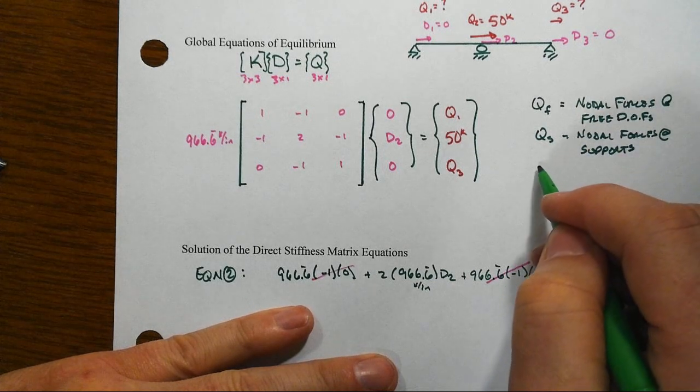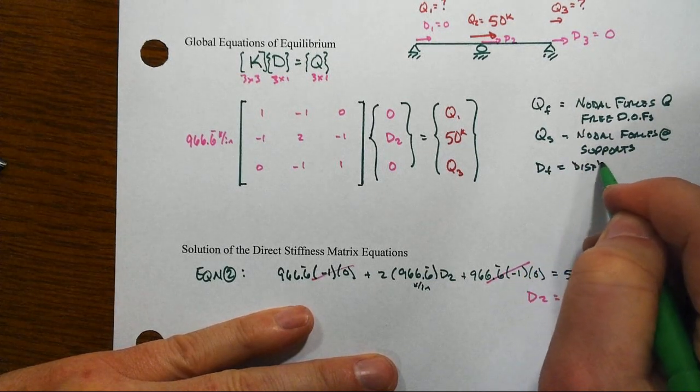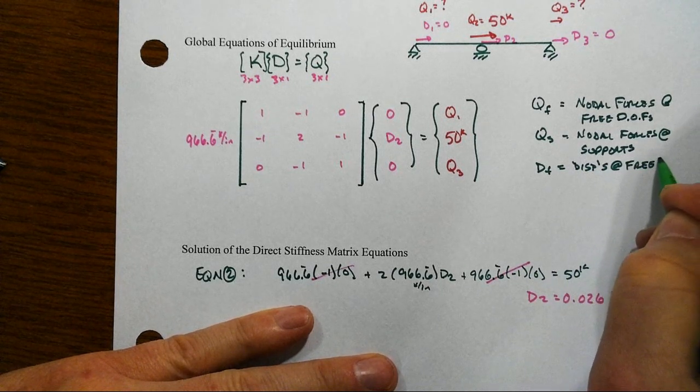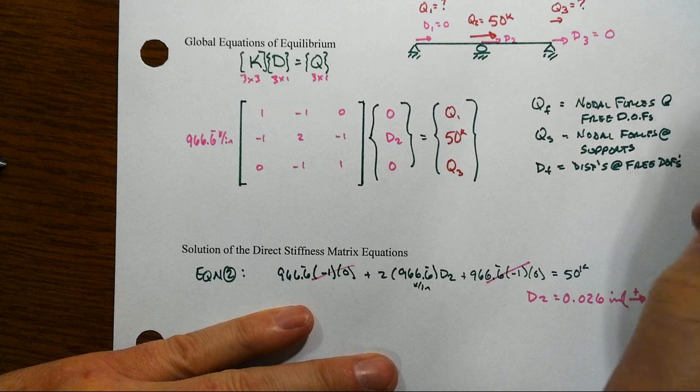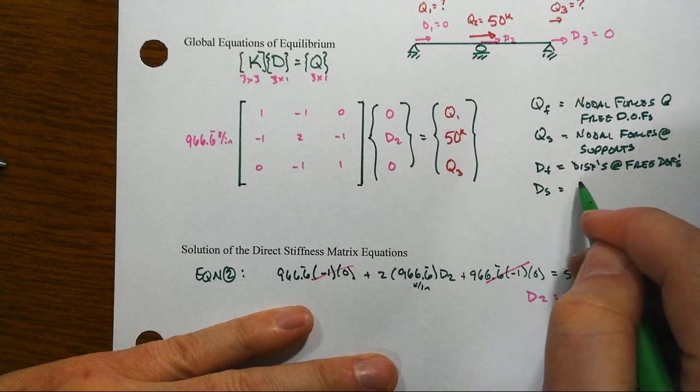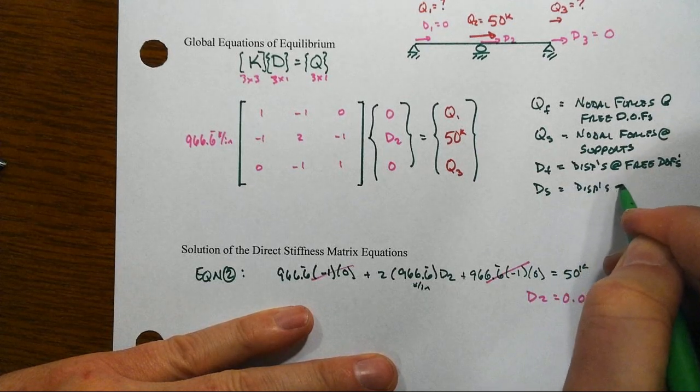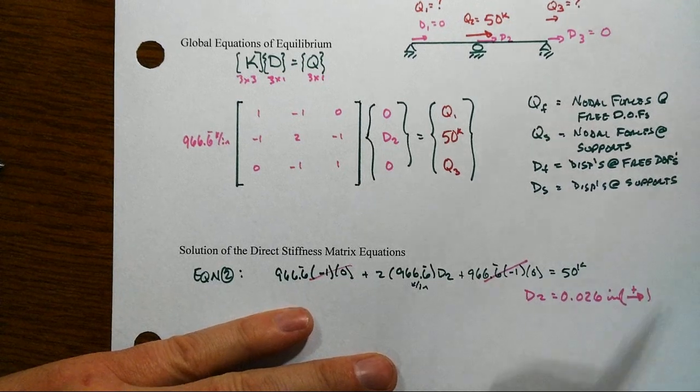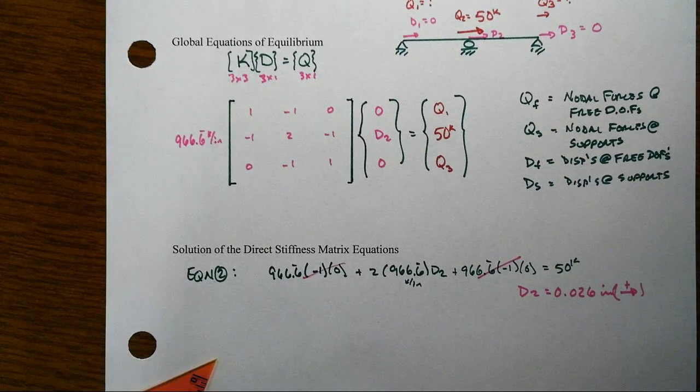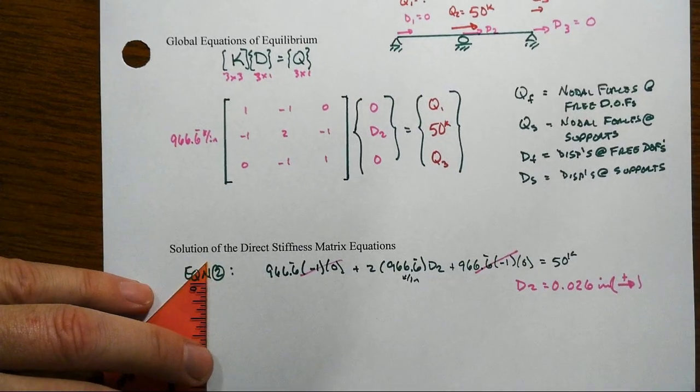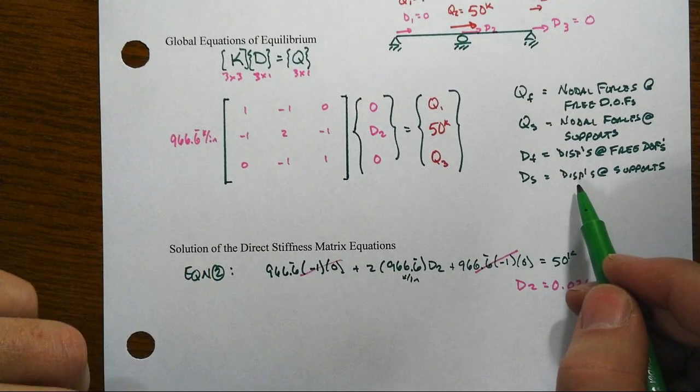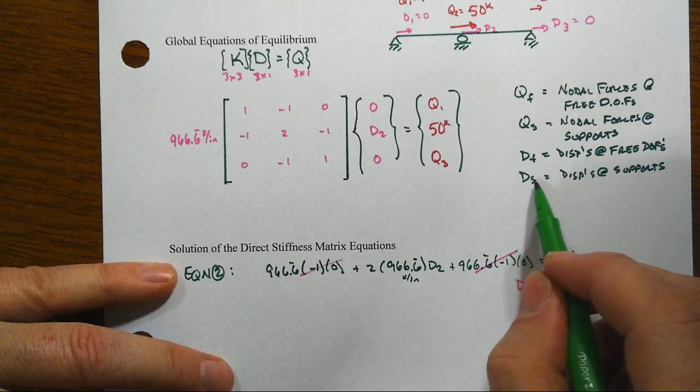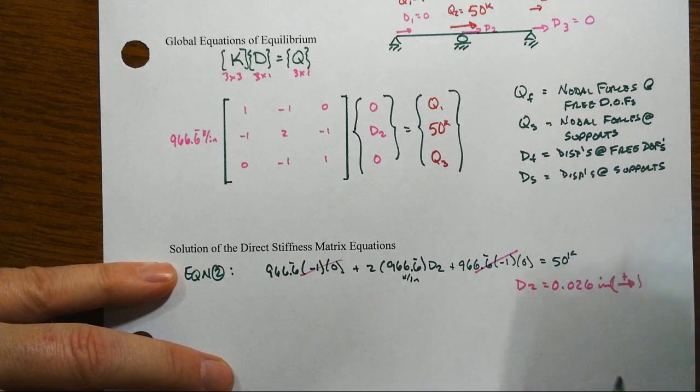We'll let Qs equal the nodal forces at the supports. Likewise, Df would be the displacements at the free degrees of freedom, and Ds would be the displacements at the supports. Generally, you probably think of those as being 0, but we could impose them as support movements—then they're a known value but non-zero—or if they were attached to an elastic foundation, we can handle that as well.